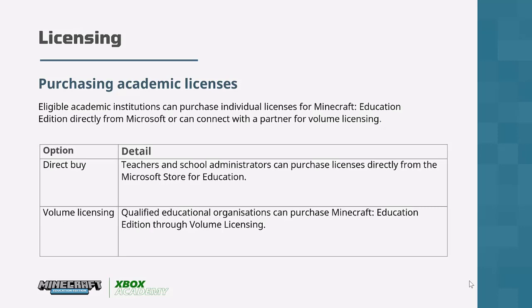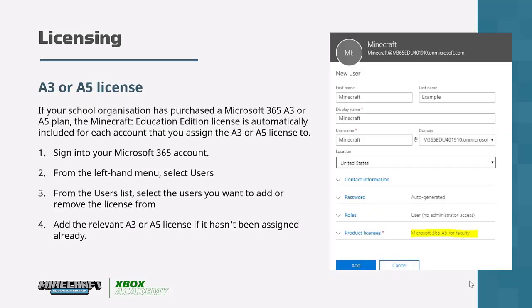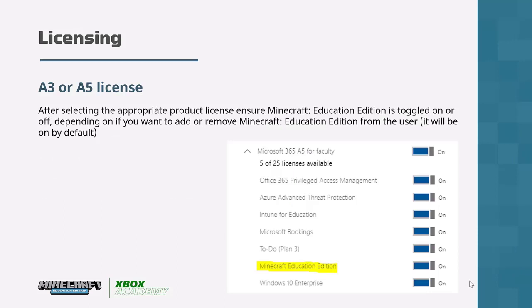Once you determine eligibility, you can buy directly from the Microsoft Store for Education, or volume licensing is available — speak to your local authority or software providers. You may already have Minecraft and not realize it: if you have a Microsoft 365 A3 or A5 plan, Minecraft Education Edition is automatically included. Simply sign into your Office 365 account, go to the left-hand menu, select Users, choose the users you want to license, add the relevant A3 or A5 license, and they're ready to go.